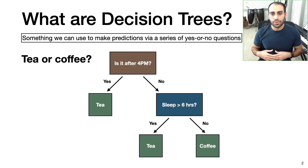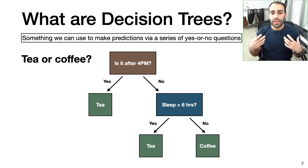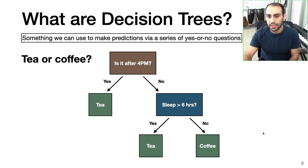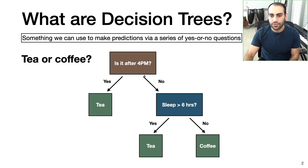Let's say we want to predict whether I'm going to drink tea or coffee. And to make that prediction, we can use a decision tree like the one shown here. The way this works is we start at the top of the decision tree and answer the following yes or no questions. First we ask, is it after 4 p.m.? If yes, we follow this arrow here, and if no, we follow this arrow here.